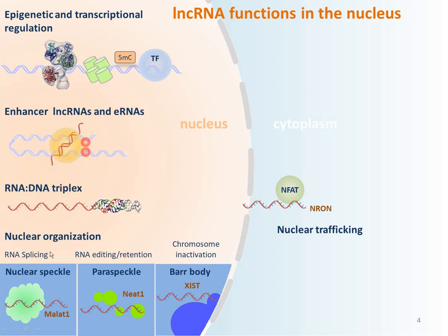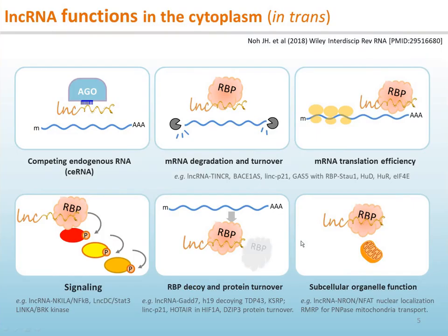Some lncRNAs are key components of subnuclear structures, such as MALAT1 in nuclear speckles, NEAT1 in paraspeckles, and XIST in Barr bodies. In the cytoplasm, lncRNAs act in trans. At the core of cytoplasmic lncRNA functions are RNA-binding proteins, RBPs. A class of cytoplasmic lncRNAs share the same microRNA binding sites, thus competing with microRNAs from silencing target mRNAs — the so-called competing endogenous RNAs, or ceRNA.